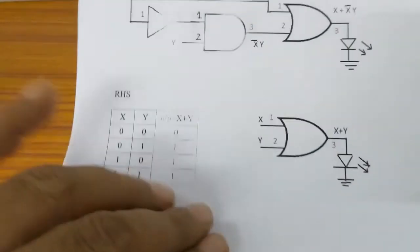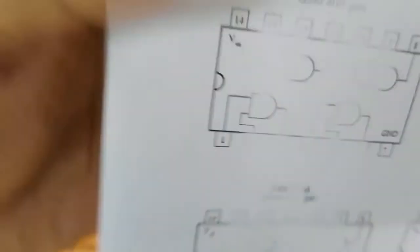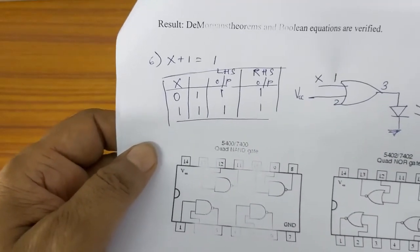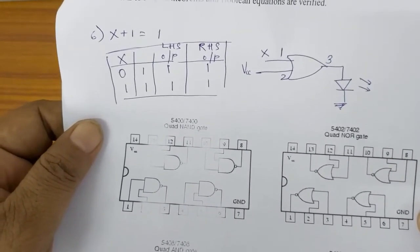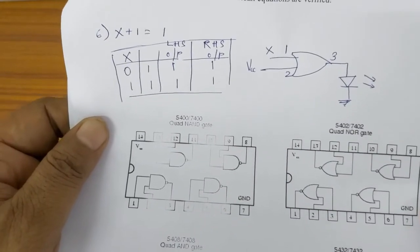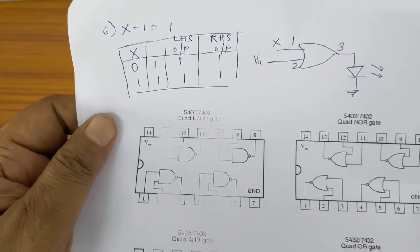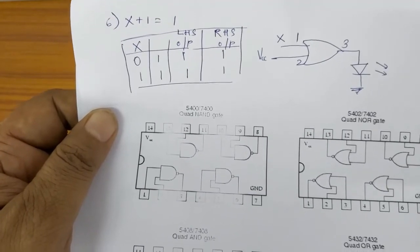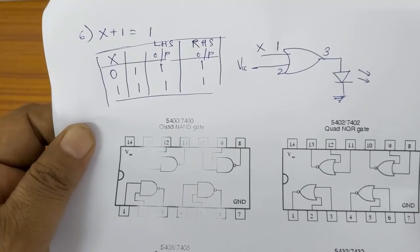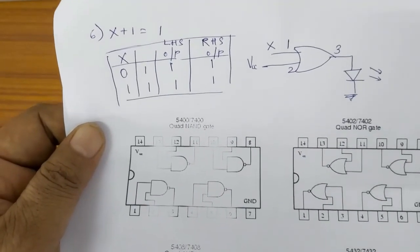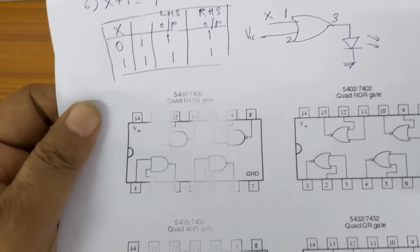For the third identity: x plus 1 equals 1. Here x is one input and the other input of the OR gate is tied to VCC, which is logic 1. The output is taken on pin 3 and given to an LED. Connections are made the same way as for De Morgan's theorems, and the output is verified. Thank you.